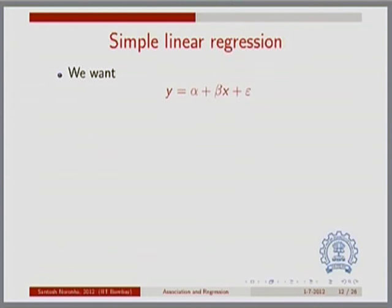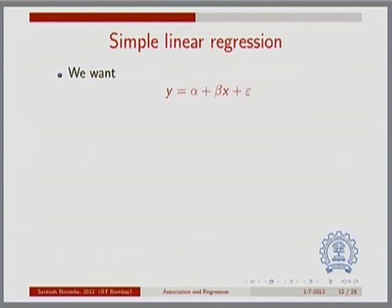I want to go back to something I said yesterday: the scientific significance of what you are doing is not necessarily relevant to the statistician. When doing statistics, it is not necessarily clear why you are looking at a straight line model rather than, say, a quadratic equation. I am going to assume you have a good reason to connect Y and X using a straight line equation. The general way to write a linear model is Y equals α plus βX plus ε.